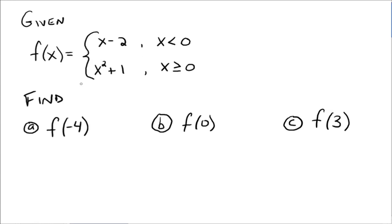All right, so if this is f of x, how do you find f of negative 4? Well, your x value is negative 4, so we go over here to our definition of our function and say, where does negative 4 fit in — the x less than 0 situation, or the x greater than or equal to 0 situation? Well, negative 4 is definitely less than 0, so it falls here, which means we use x minus 2. So we would say equals negative 4 minus 2, and f of negative 4 is just the number negative 6.